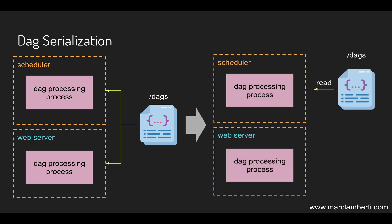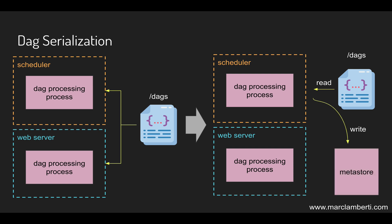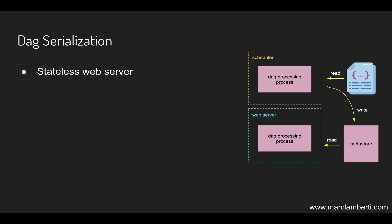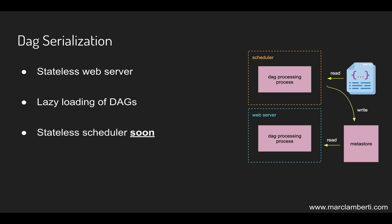By doing so, the scheduler will parse the DAGs folder, process the DAGs, and store them into the database. Then the web server will read the DAGs from the database instead of the DAGs folder. This makes the web server stateless and your DAGs will be loaded on demand — meaning instead of processing all of them at an interval, only the scheduled DAGs from the Airflow UI will be loaded and processed. This improves performance and reduces scheduling lag. This feature is already available for the web server, but you have to wait for Airflow 2.0 for the scheduler to do the same.